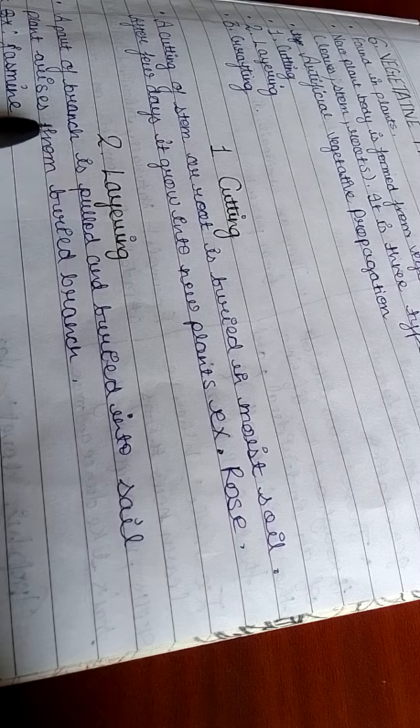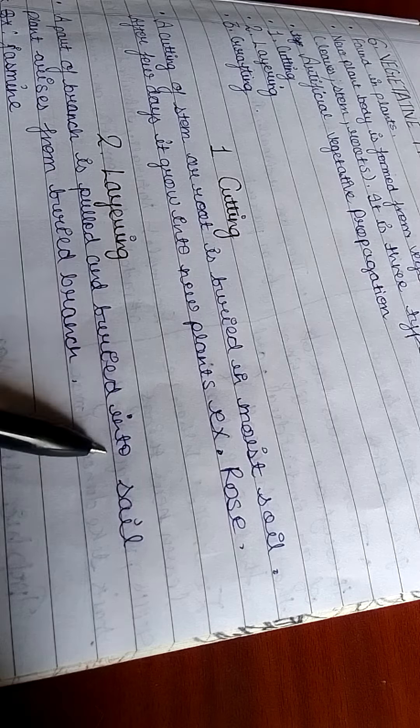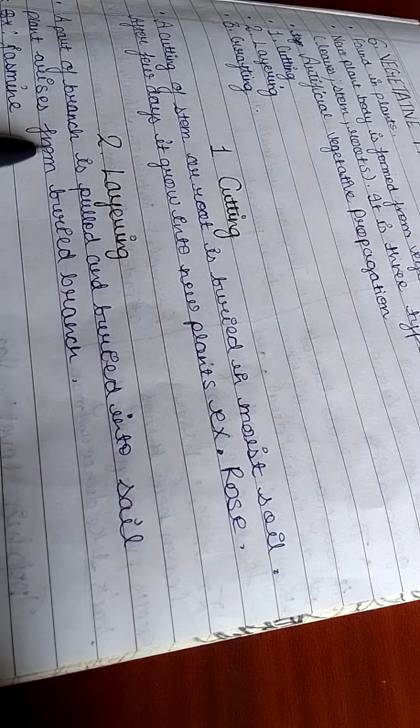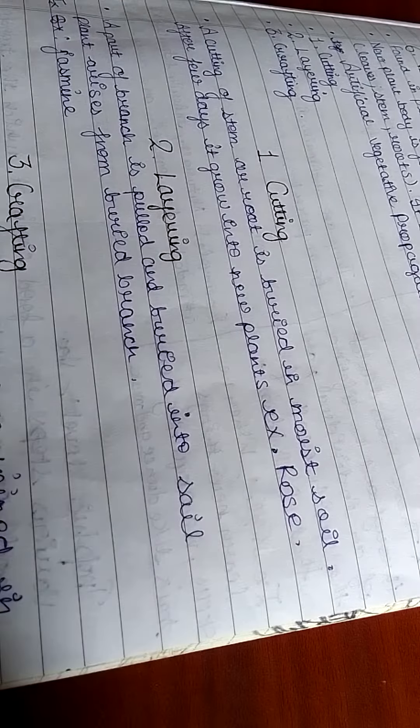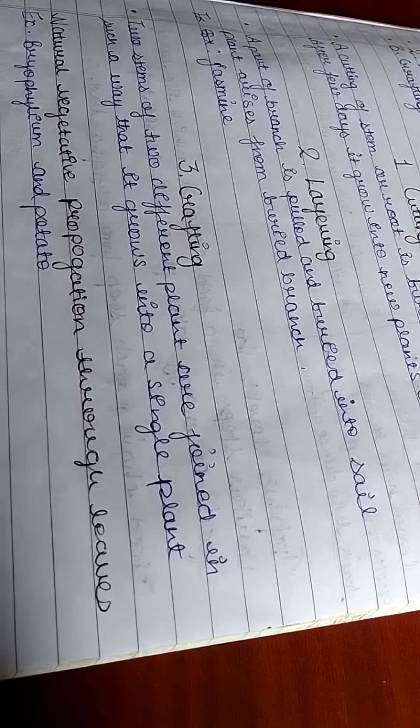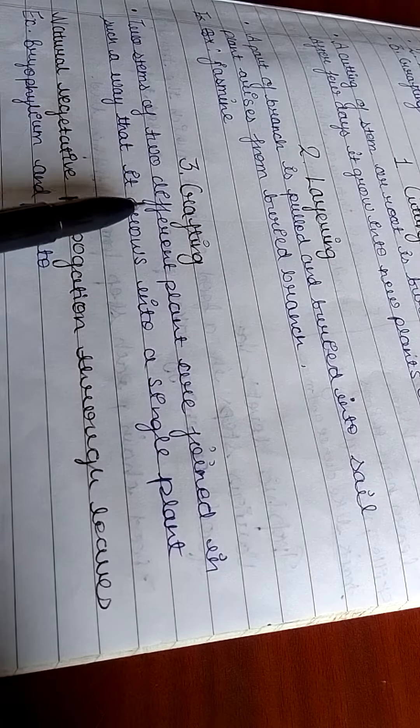Second is layering. A part of a branch is pulled and buried into soil. The plant arises from the buried branch. Example: jasmine. Third is grafting. Two stems of two different plants